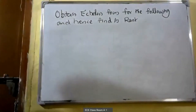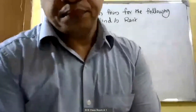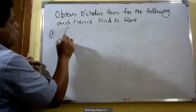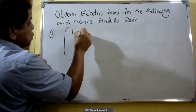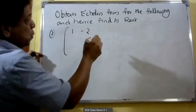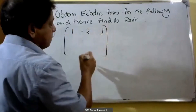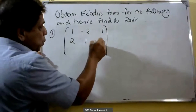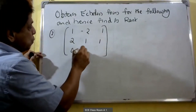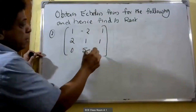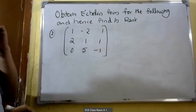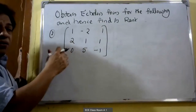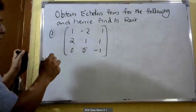We can do another problem. Second problem: the matrix is 1, minus 2, 1 / 2, 1, 1 / 0, 5, minus 1. We convert this matrix into echelon form and find its rank.